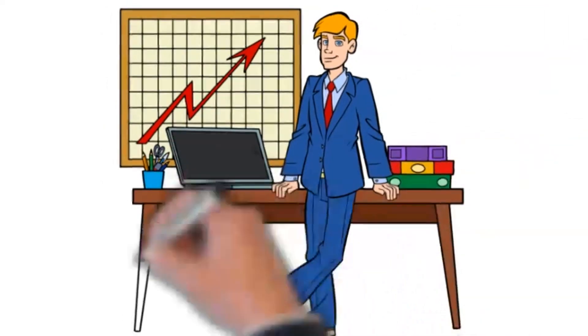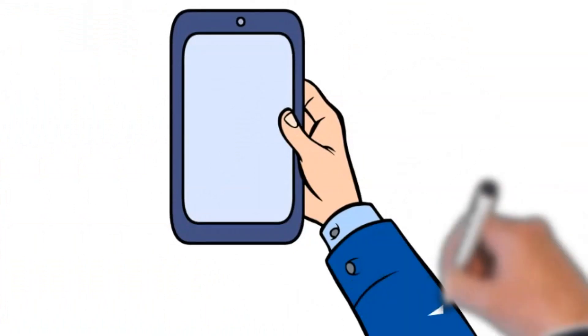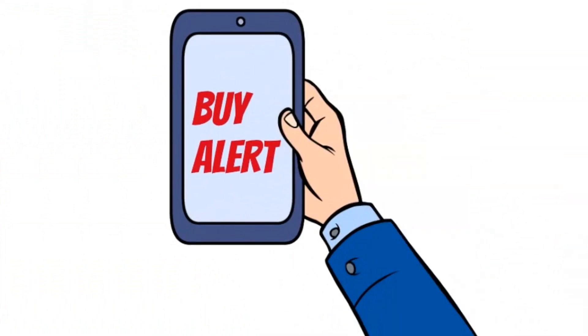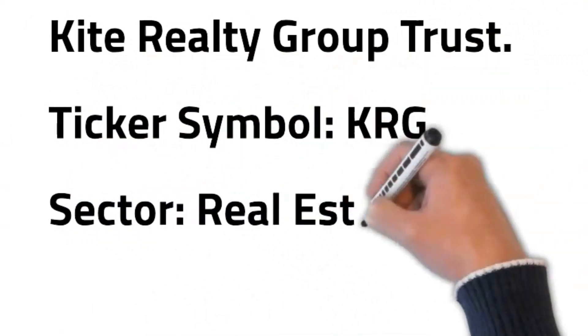What's up YouTube, this is Jack and I got another time-sensitive short video for you to check out. A buy alert was triggered on January 13, 2022 for Kite Realty Group Trust, ticker symbol KRG, sector real estate.